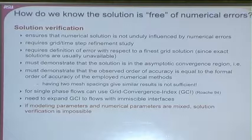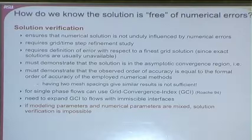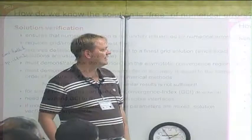If you don't have an exact solution, how can you define an error? Typically the only thing you can do is define errors with respect to the finest mesh resolution you have. Then you have to demonstrate that the solution is in what's called the asymptotic convergence regime — meaning the observed order of accuracy equals the formal order of accuracy.